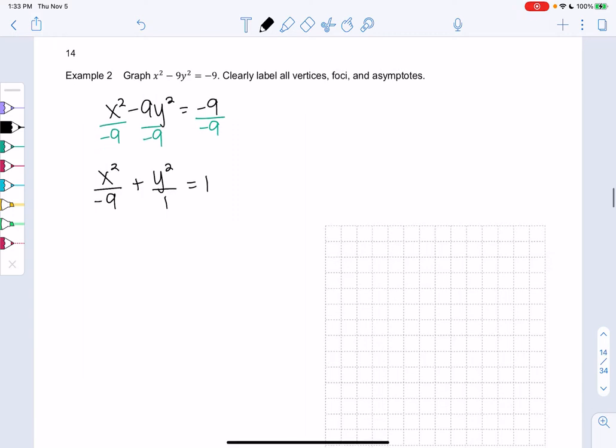And so what I'm going to do is I'm going to change the order so it looks like the formula that we have. So y squared minus x squared over 9 equals 1. And so now we know we have a vertical hyperbola because y squared comes first.